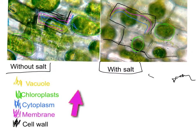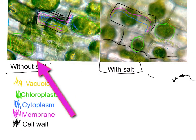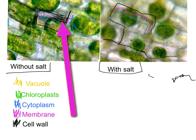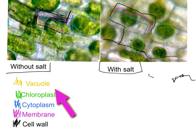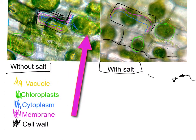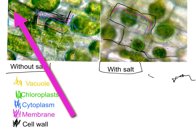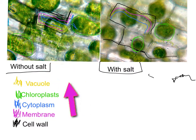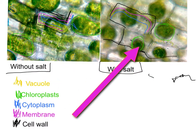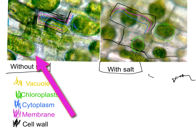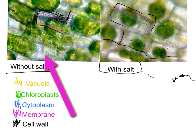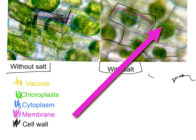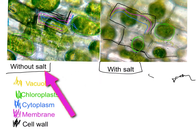On the left you see without salt, and on this picture with salt. Starting with the vacuoles — shown here in yellow — they are present in the without-salt image but not present in the one with salt water. The chloroplasts are present in both the without-salt and with-salt images.